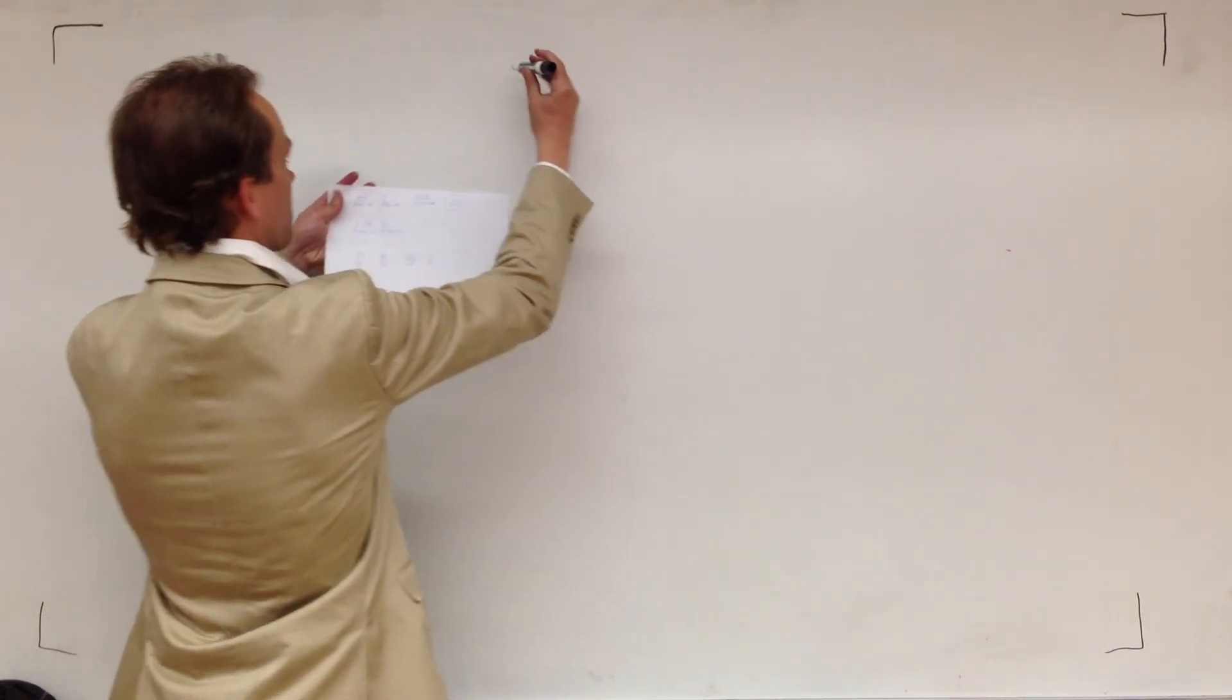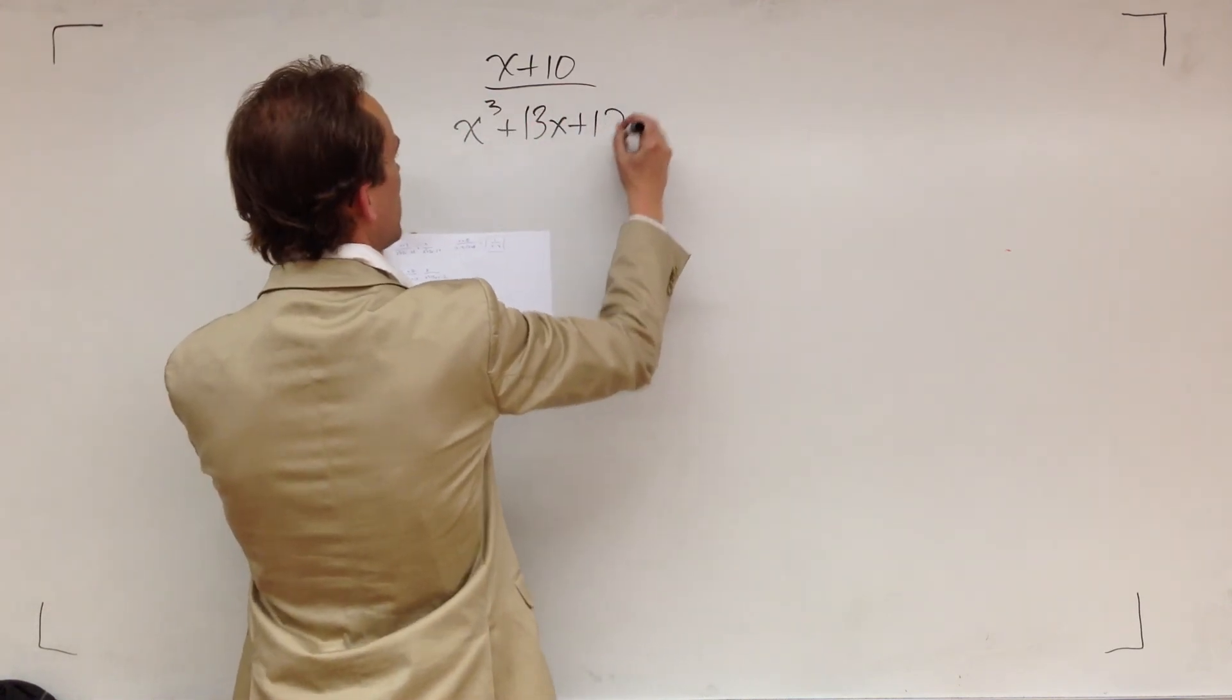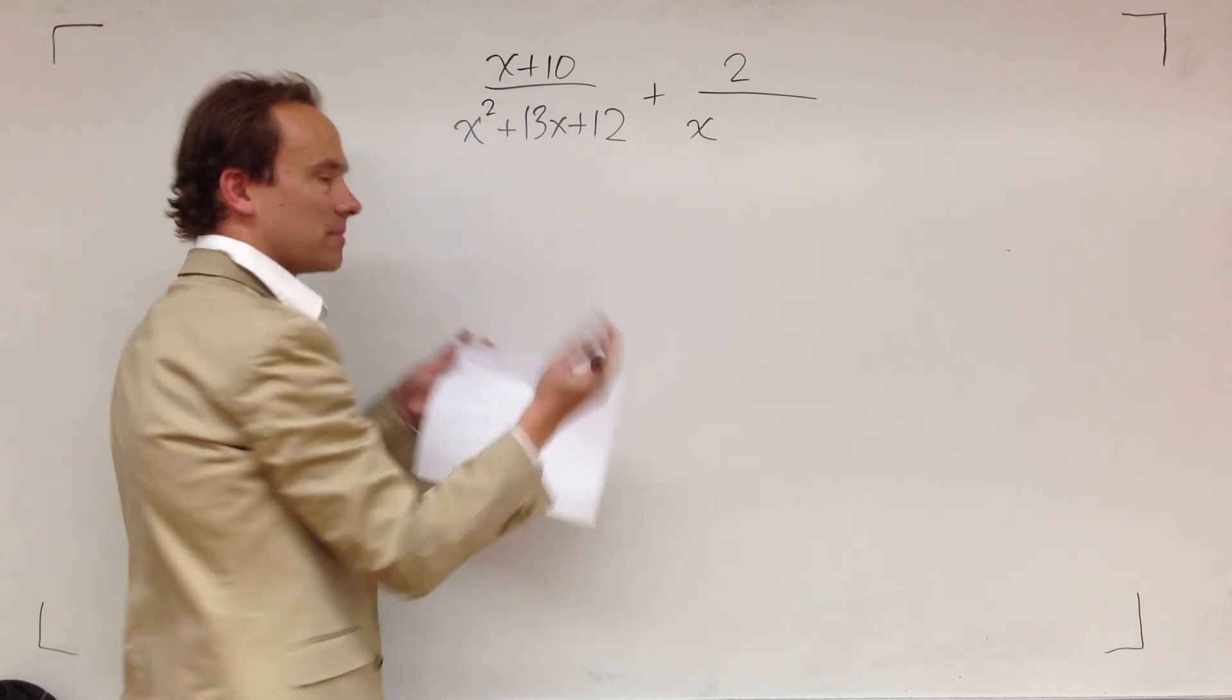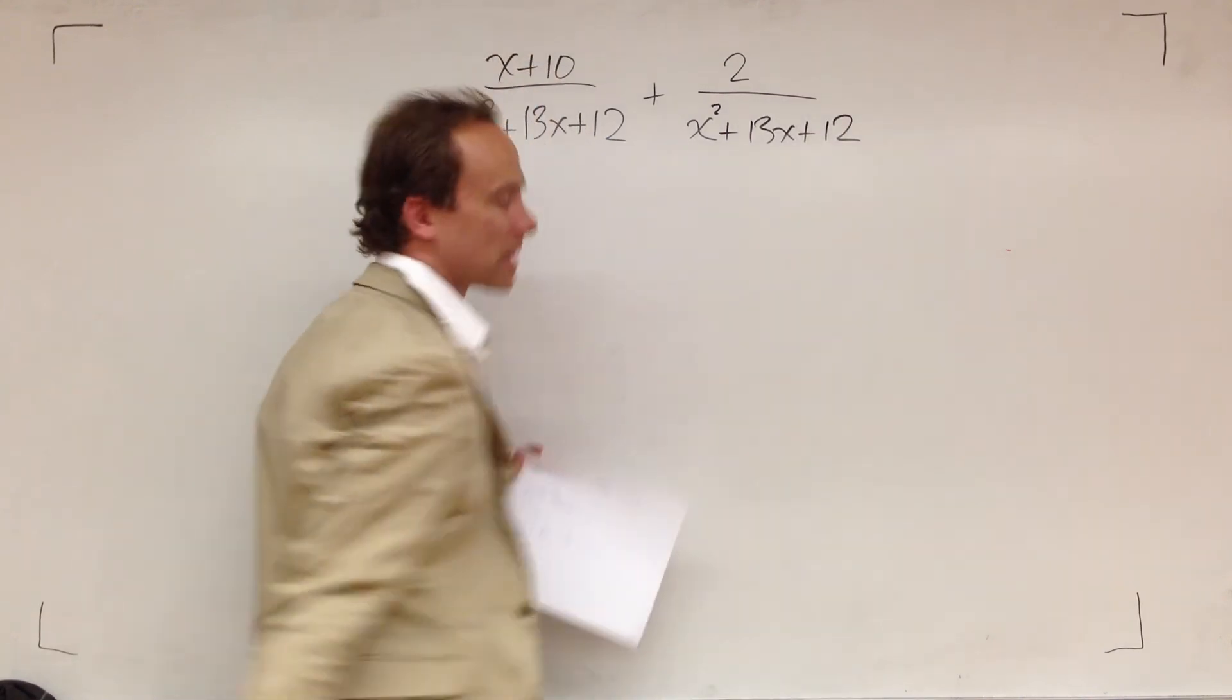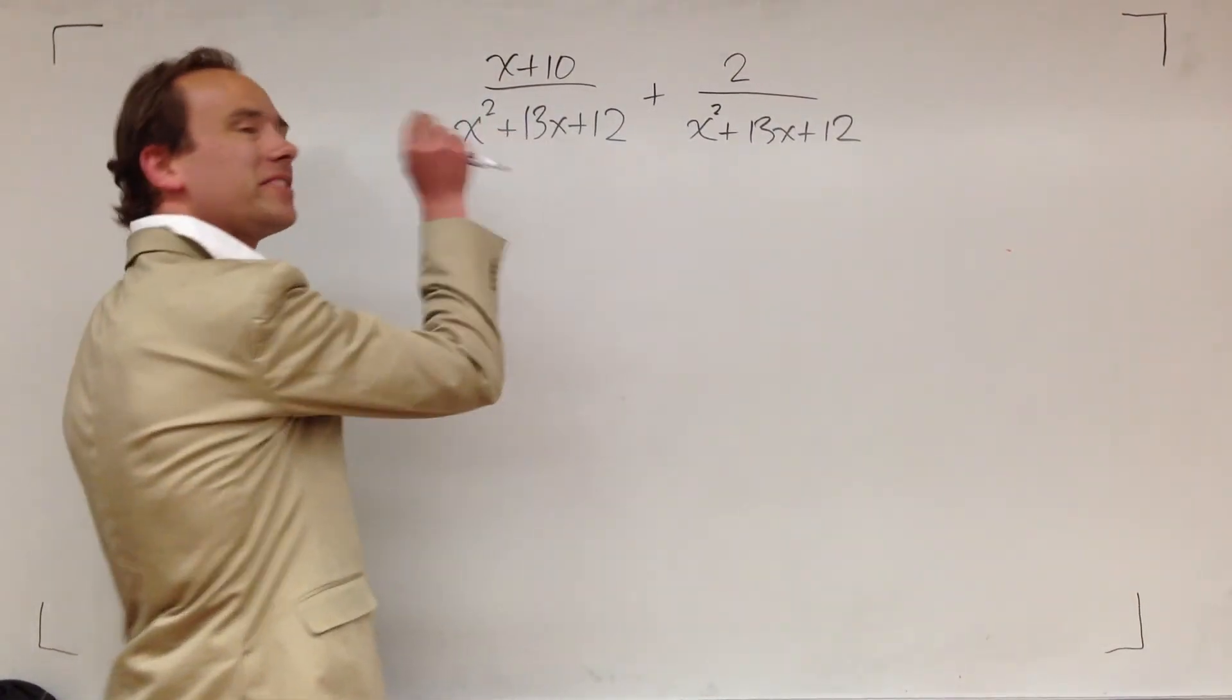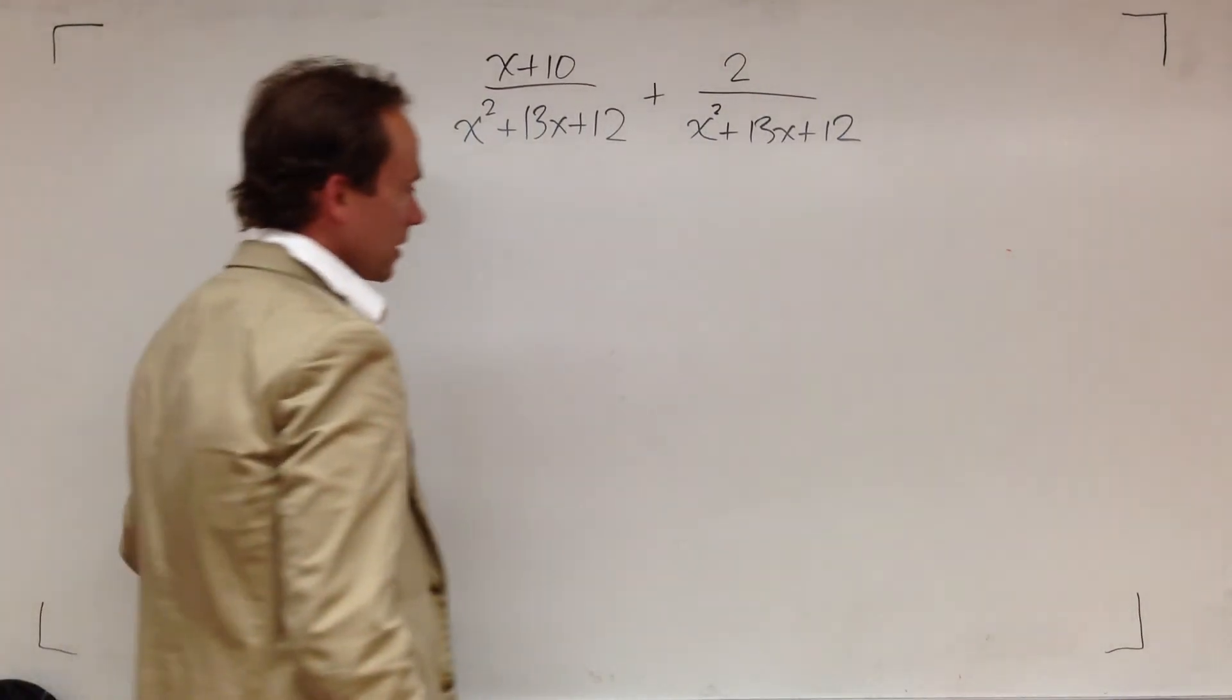Here's another one. We got x plus 10 over x squared plus 13x plus 12, and let's add two over—should have been squared—plus 13x plus 12. We want to add these rational expressions. Right now, if I was you, I would pause this video and I would give it a shot on my own before you listen to this explanation. I think the explanation will be more meaningful that way.